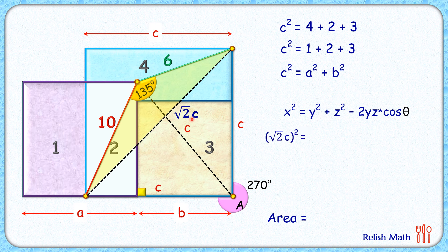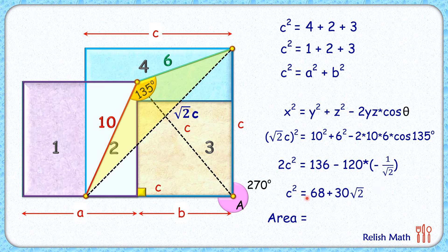Now solving it, (√2c)² is 2c², and cos(135°) that's -1/√2. Now solving it, let's first divide full equation by 2, so this will be 68 and this is 60. Now this negative negative will become positive, and 60 divided by √2 will become 30√2. Now c², that's what is area of this blue square.